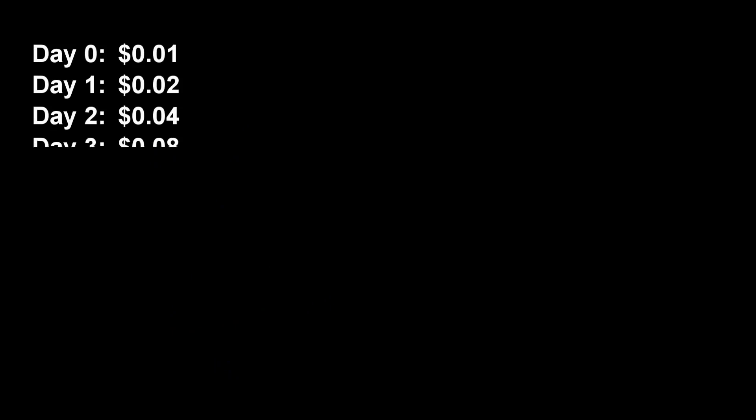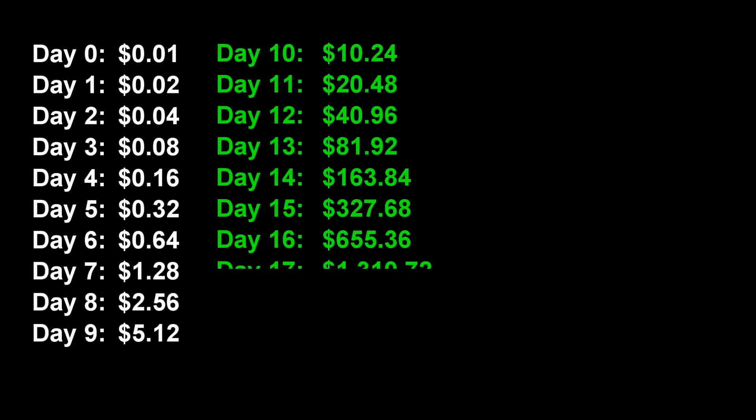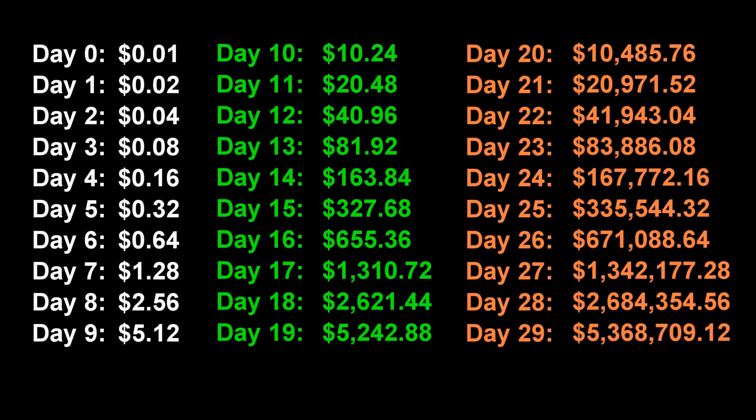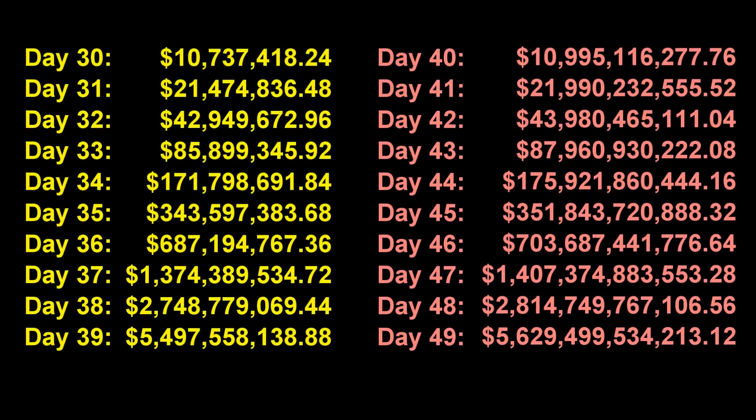Metcalfe's law is a model for predicting exponential growth, and exponential growth is one of those things that is extremely difficult for us humans to really wrap our brains around. For example, take a penny and double it every day for a month — at the end of the month you have multiple millions of dollars. If you keep doing that for another month, you have more money than even exists on planet Earth.